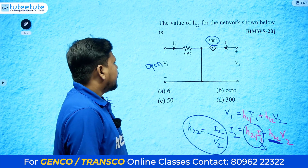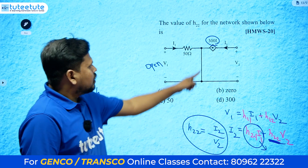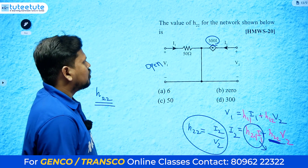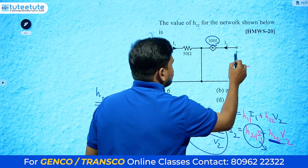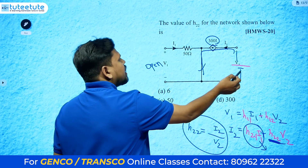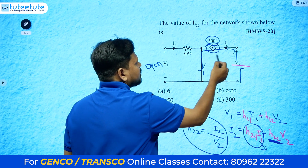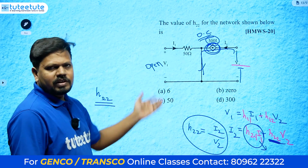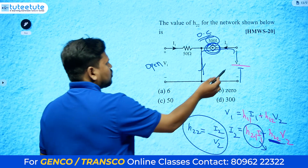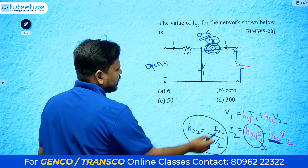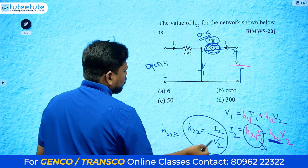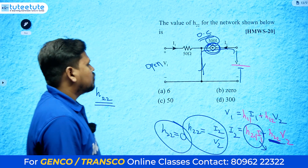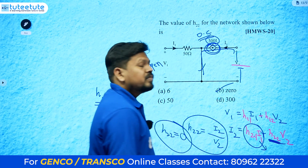Since i1 equals 0, the dependent term 300*i1 is also zero. Whatever source you connect, whatever current has to go inside is zero — it acts like an open circuit, so no current will flow on either side. Therefore i2 equals 0, and h22 equals 0 divided by something, which equals 0. Option B is the correct answer.